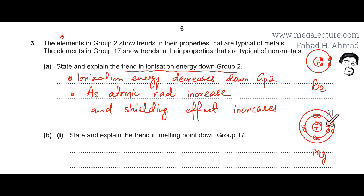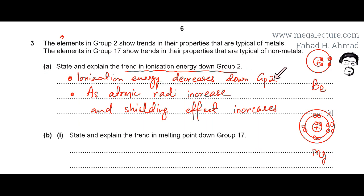As you move away from the nucleus down the group, electrons are further away and there are lots of inner electrons coming in between the nucleus and the outer electrons. So ionization energy decreases down group 2 because atomic radius increases, giving bigger atoms, and it becomes easier to lose electrons. Shielding effect also increases.